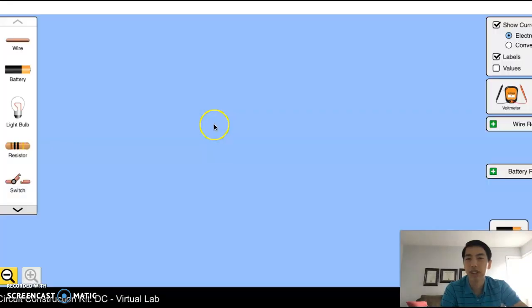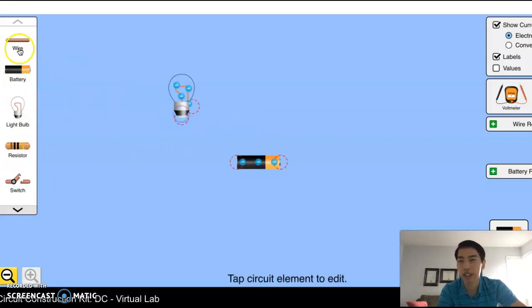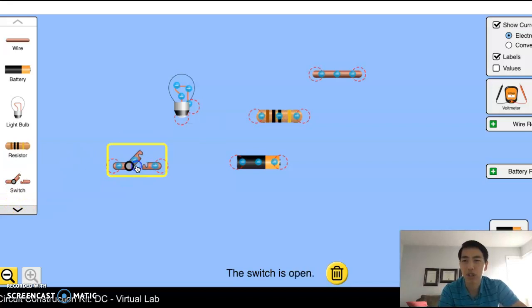We're going to go on this website, which I showed you in the previous video, where you can drag and drop various circuit components. Here's a resistor. And here's a switch. The switch, when you click it, you can open it and close it. So this is what you're going to be using to build circuits.